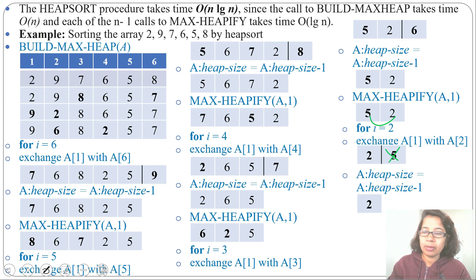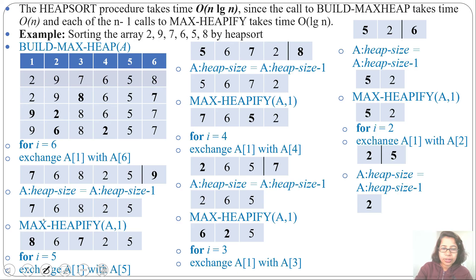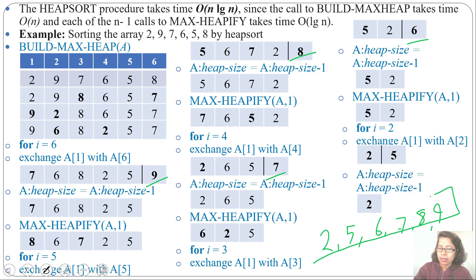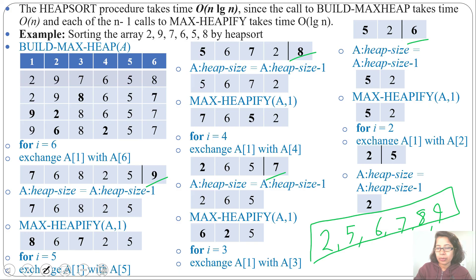We run the algorithm from i equals n down to i equals 2. So first we delete 9, then 8, then 7, then 6, then 5, and finally 2. The resulting sorted array is 2, 5, 6, 7, 8, 9. Every element we delete is placed back into the same array, giving us our sorted result.